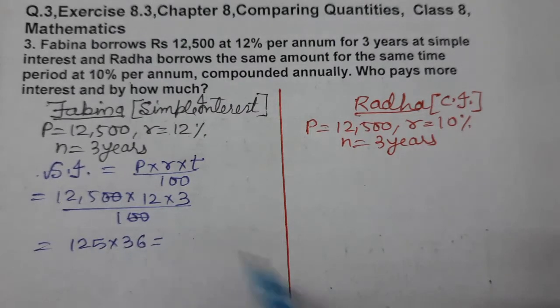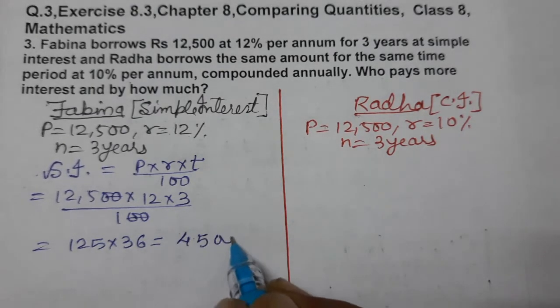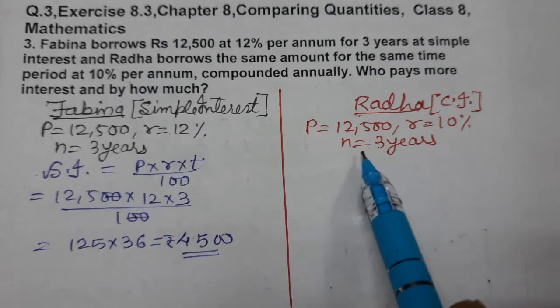Multiplying, the answer is rupees 4,500 interest. Fabina pays rupees 4,500 interest.